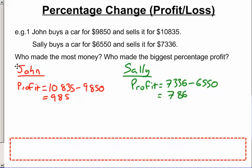So John made the most money. He made $985, whereas Sally only made $786.